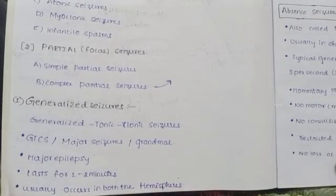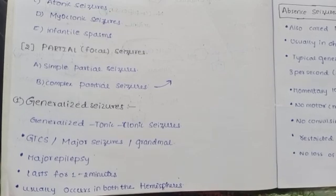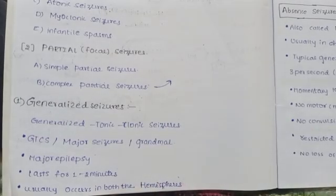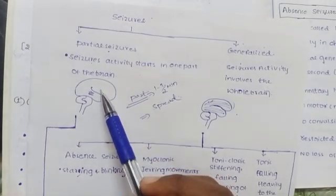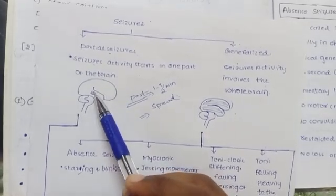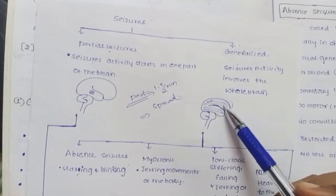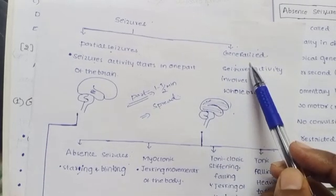Hello everyone. In the previous video, what is epilepsy, seizures, and classification of seizures were completely discussed. If that is not clear, go watch that video first. So we already discussed that seizures are of two types: partial and generalized. Partial means abnormal activity in only one part of the brain in motor, sensory, and psychomotor activities. Generalized means abnormal activity throughout the whole brain.